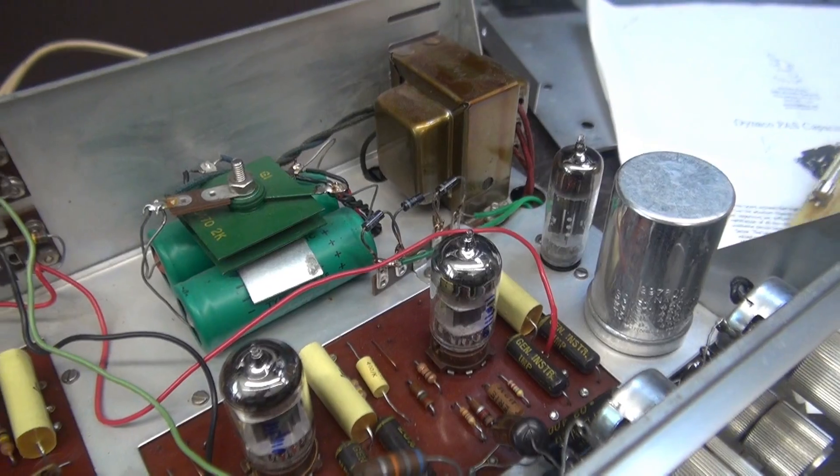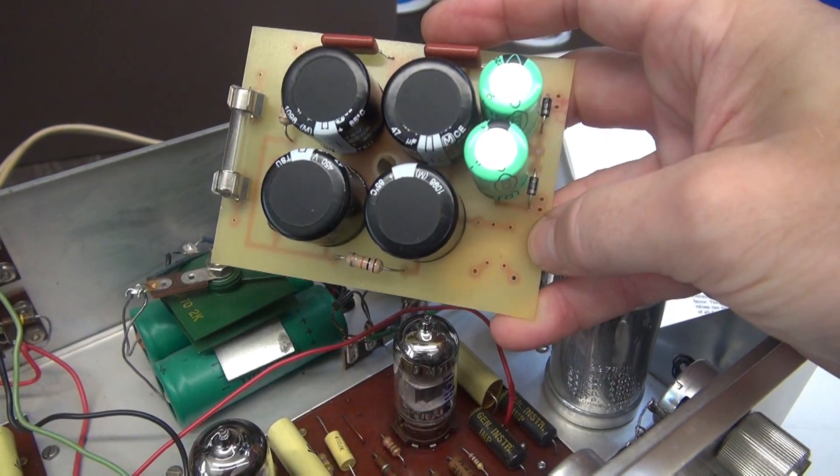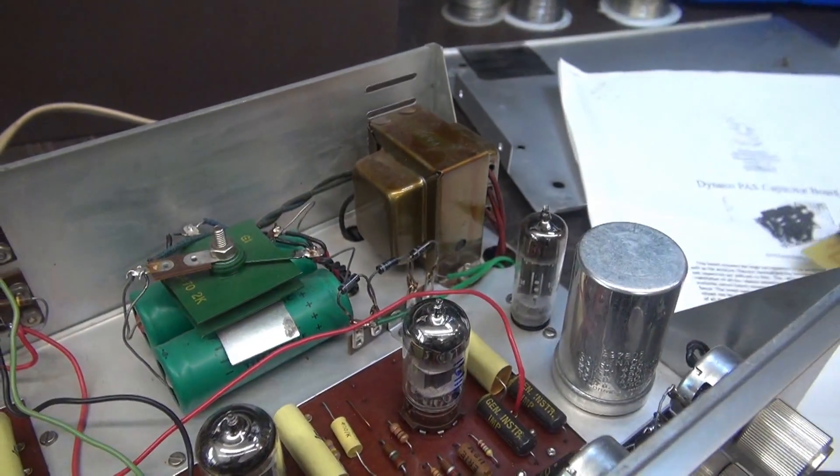So what's the best way to protect that power transformer and save yourself a $90 expense? Put in fresh caps, put in this board, use the diodes, eliminate the 12X4.